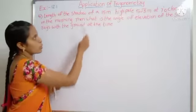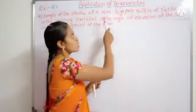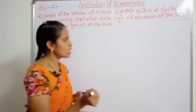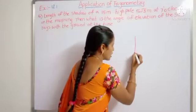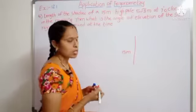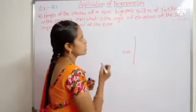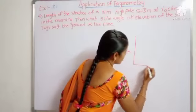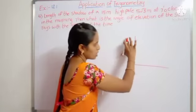Length of the shadow of a high pole is 15 meters. Here one high pole is there. This length is 15 meters. This shadow is 5 root 3 meters. This is the shadow of this pole.